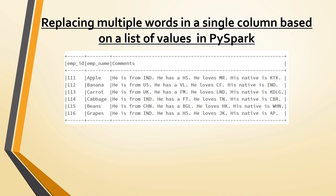Today's topic: we have some data where under the comments column there is some text. We will see how to replace multiple words in a single column. For example, 'ind' in caps should be replaced with 'india', 'hs' should be replaced with 'house', 'mr' with 'maharashtra', 'ktk' with 'karnataka', and so on. There is a standard replace function, but the problem with replace is you can only do one thing at a time.